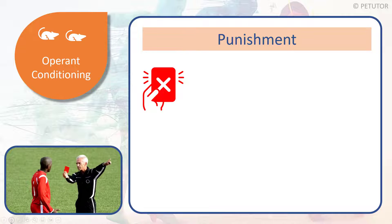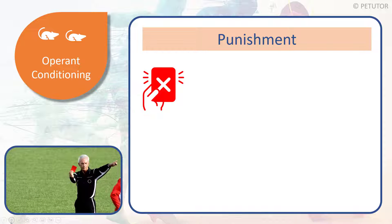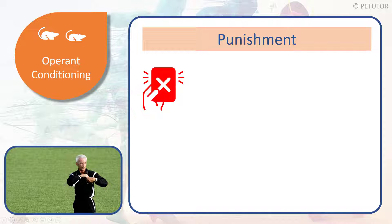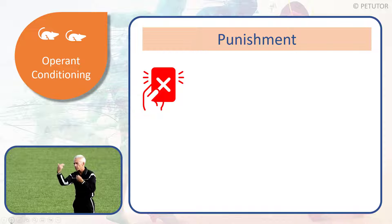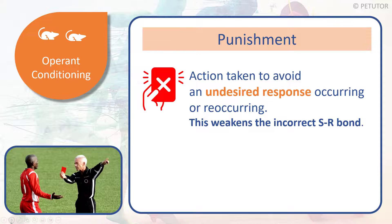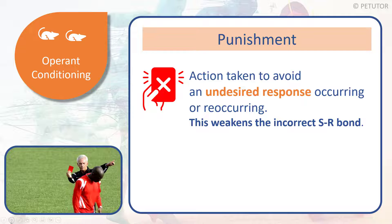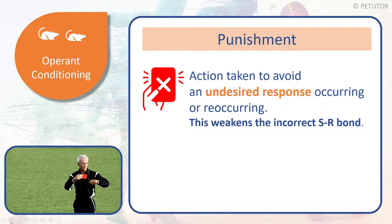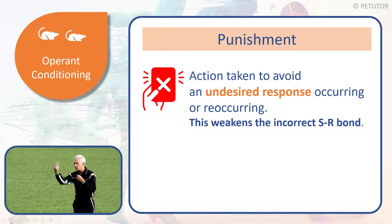When we punish someone, we want to stop the undesirable outcome from becoming the dominant response. Punishment is any action taken to avoid an undesirable response occurring or reoccurring. What we're trying to do is weaken the incorrect SR bond.